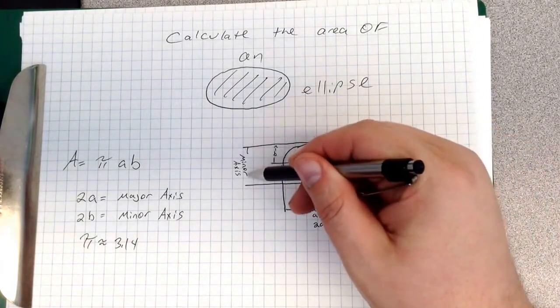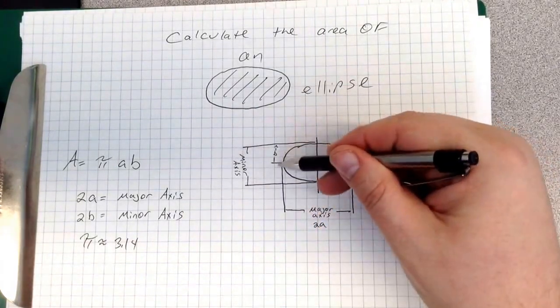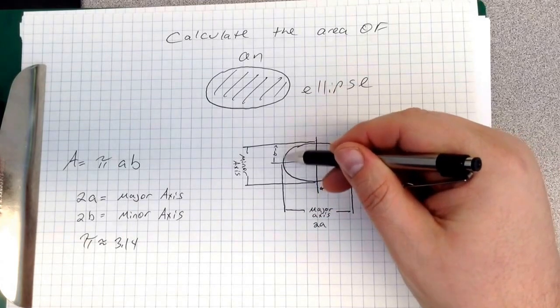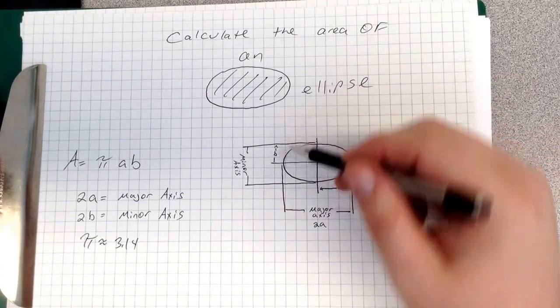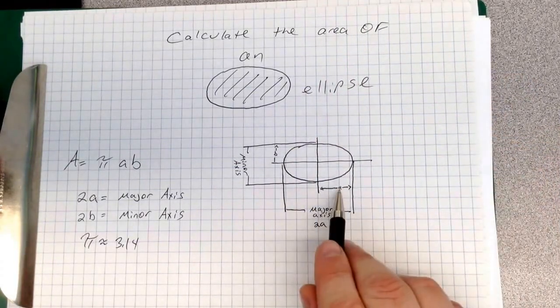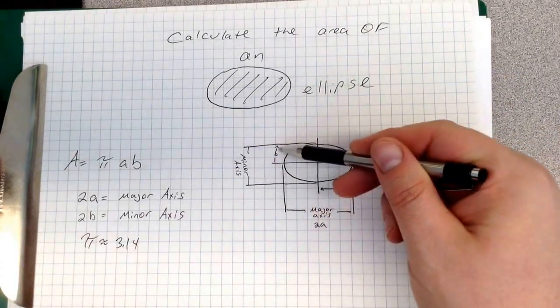This is your minor axis, and you need to know this distance right here, which is half of your minor axis, half of your major axis, or b. And this is 2a, so that's a. This is 2b, so that's b.